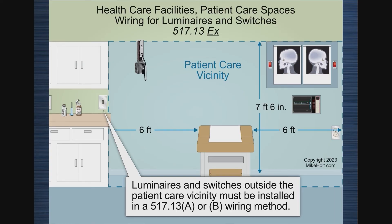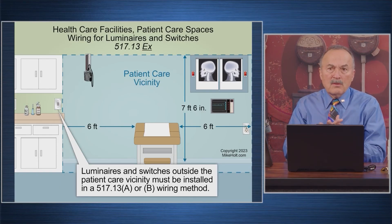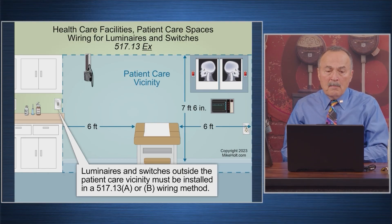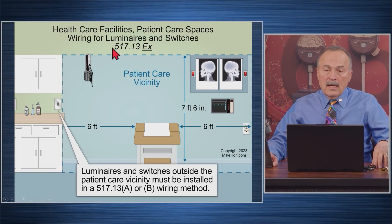The code then addresses the area six feet around and seven and a half feet from the ground near where an examining bed is — that's called the patient care vicinity. In this patient care vicinity there are some restrictions. Outside that vicinity, there are some permissions. Luminaires and switches outside the patient care vicinity must be installed in accordance with 517.13A or B, but there is some question as to exactly how to apply 517.13A or B when you're outside the patient vicinity.